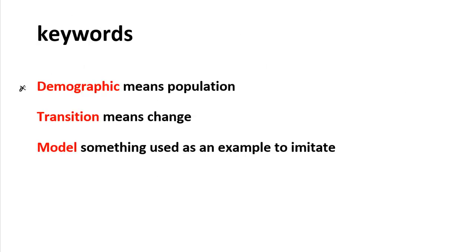What is demography? Demography simply means population. Transition simply means change. A model is something used as an example or used to imitate real life. So the demographic transition model is the population model that tries to look at the changes in population over the years.